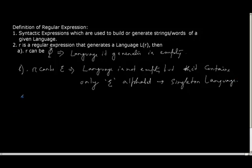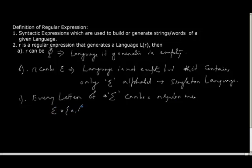And the third is every letter. R can be either phi or R can be epsilon or every letter of alphabet set sigma can be a regular expression. Which means, suppose my Σ is A, B, C, then A can be a regular expression, B can be a regular expression and C can be a regular expression. Understood?